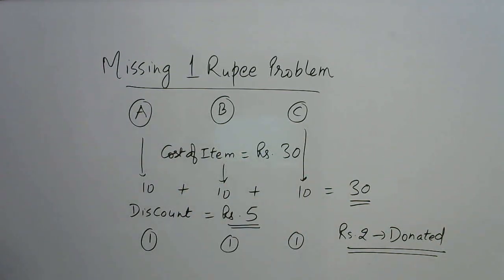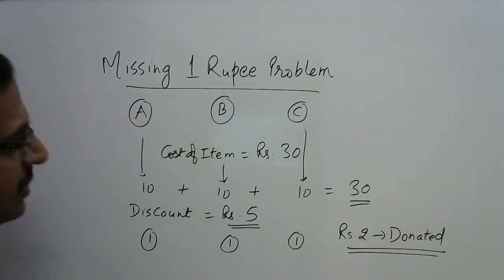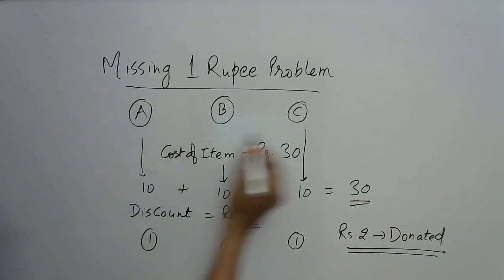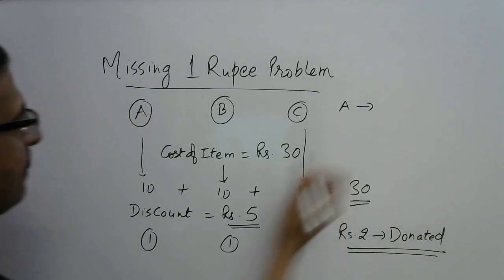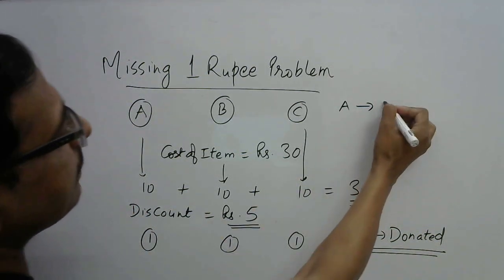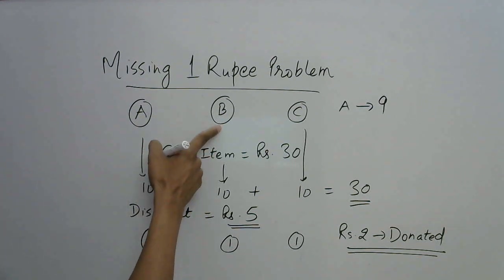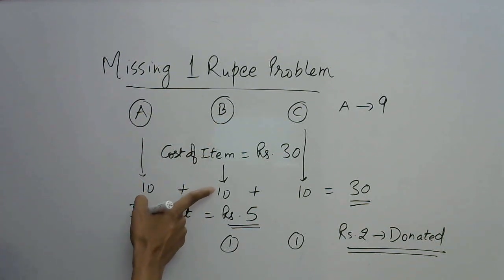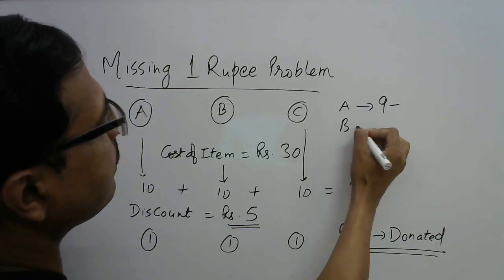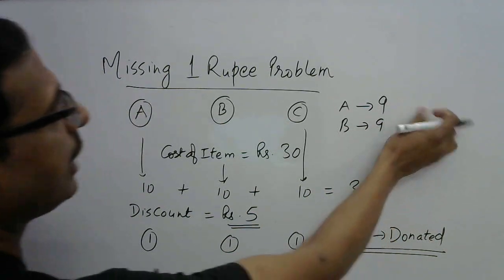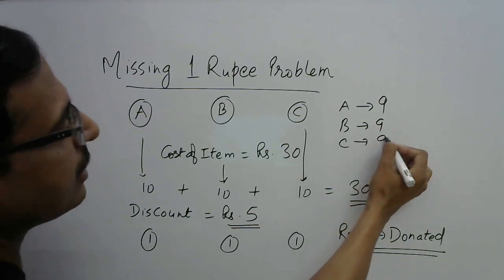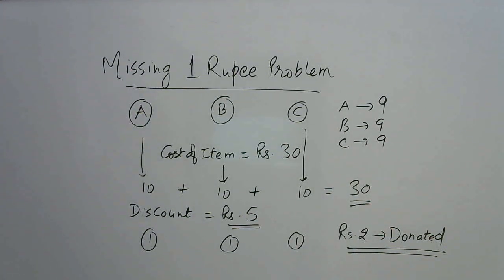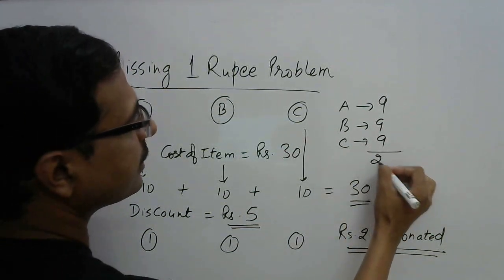Now in this transaction, how much did A pay? So he paid 10 rupees but he got back 1 rupee so he paid 9. How much B paid? He paid 10 and got back 1 rupee, so he paid 9. And similarly C also paid 9 rupees.